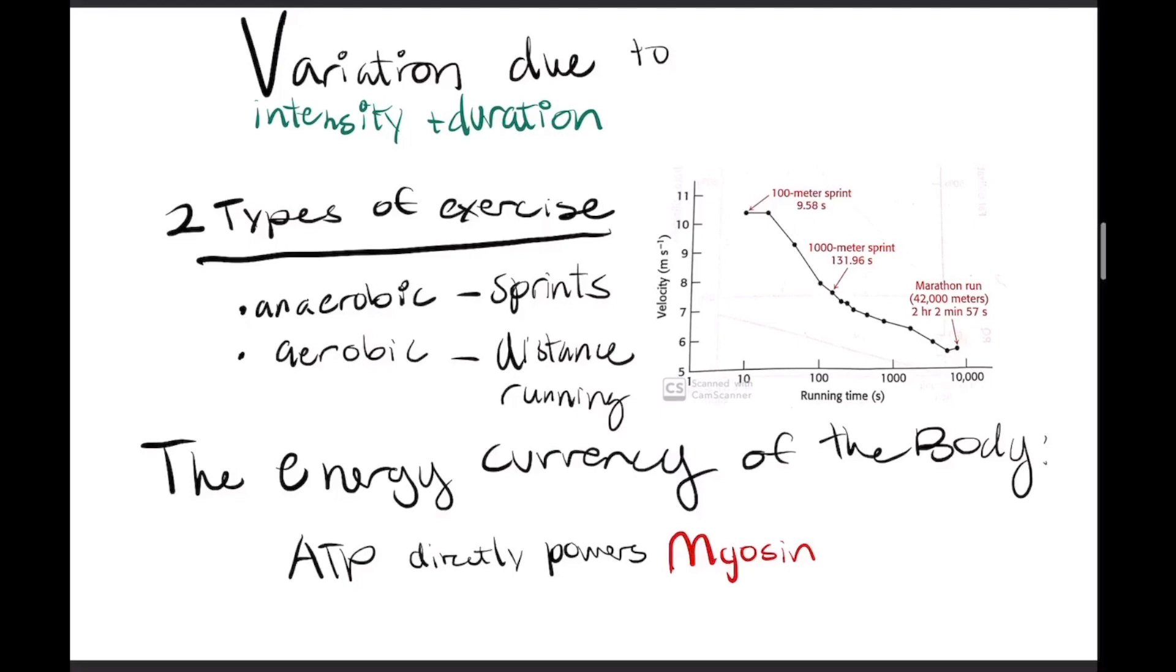The energy currency of the body, as we know, is ATP. ATP directly powers a protein in our muscles called myosin. What myosin does is it converts chemical energy into actual movement. ATP directly powers myosin. The variation comes with how we actually get our ATP. What are the fuel choices we have when it comes to getting the energy for all these different types of exercises? The variation comes with fuel choice.